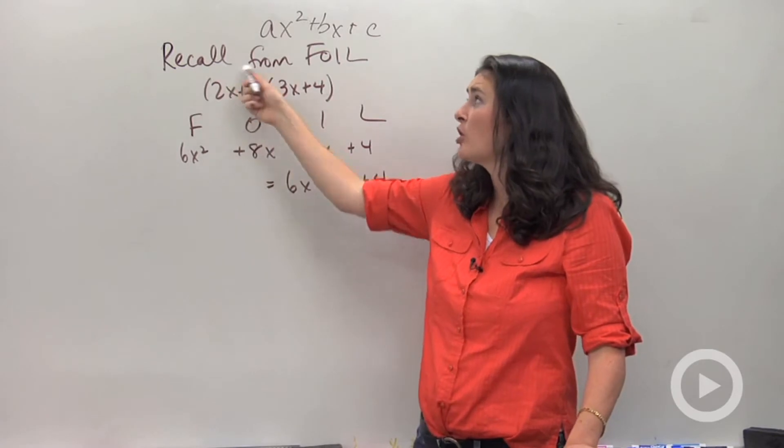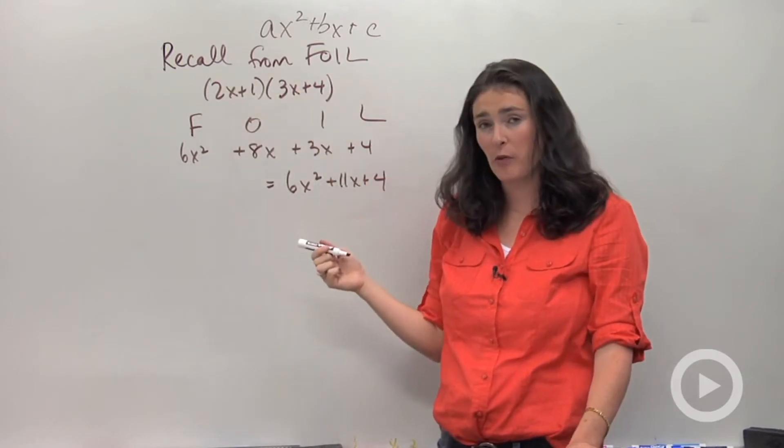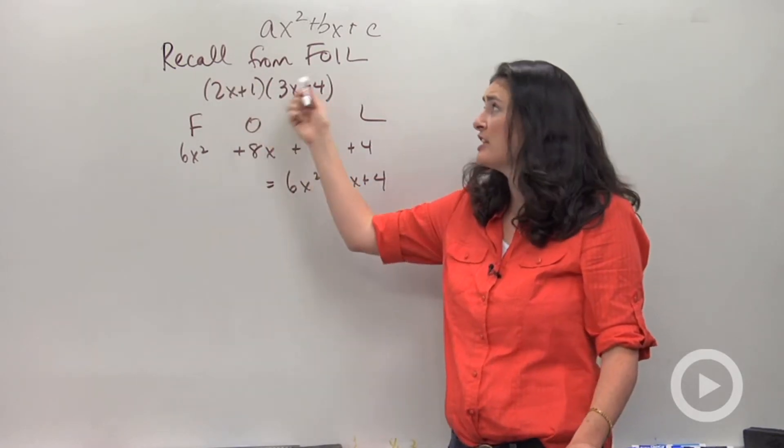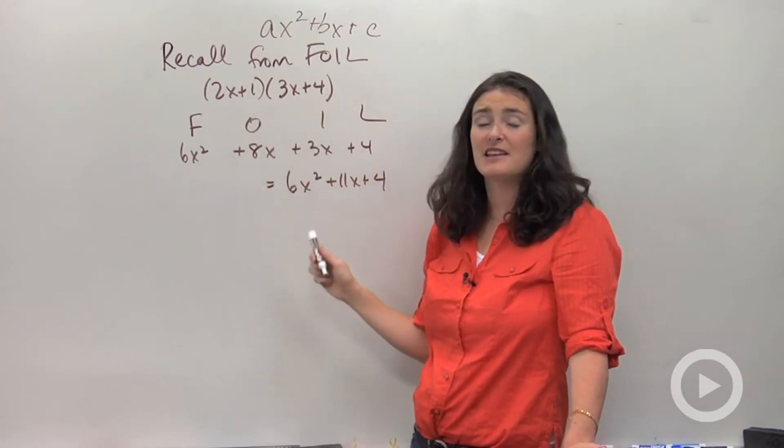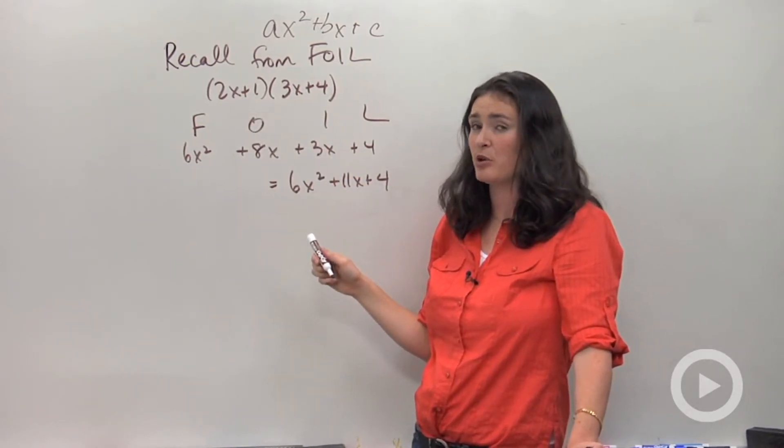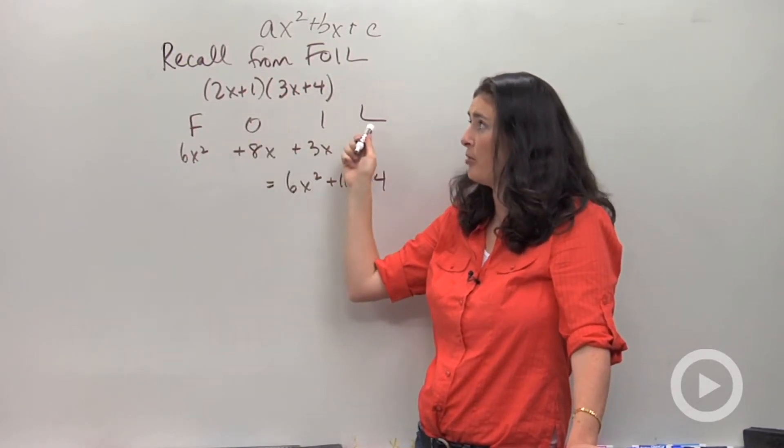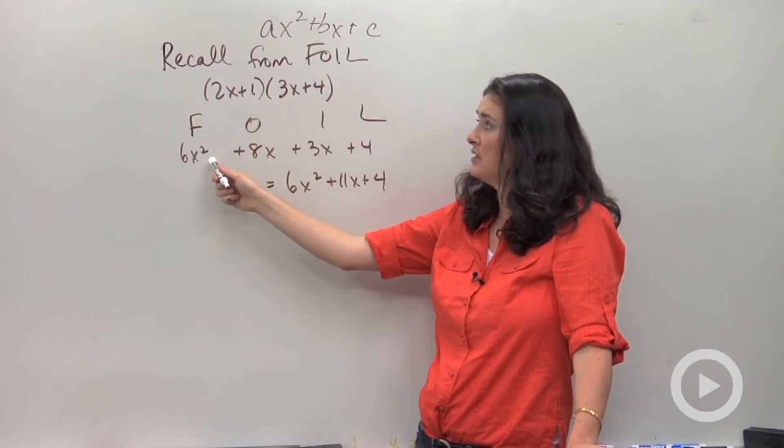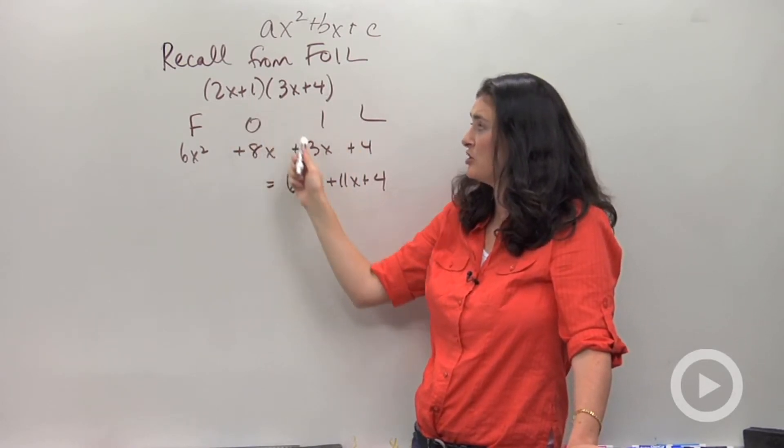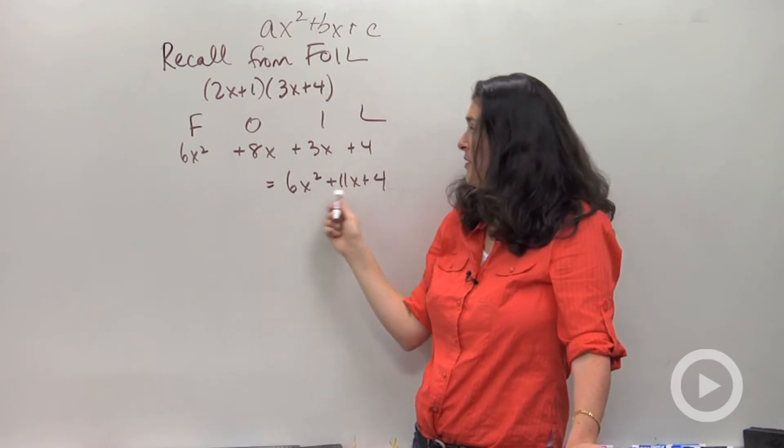What I wanted to do is show you guys something you already know before we look at this new stuff. You already know how to foil. If I were given these two binomials and asked to multiply them I will be doing the foil process: firsts, outers, inners, and lasts and then combine like terms.